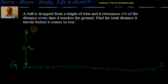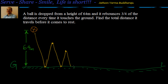The first time the ball falls down, due to gravity it comes down and touches the ground. Then it rebounds — it rebounds up to 3/4 of the distance. Once it rebounds, due to gravity it comes down again. Once it touches the ground again, it rebounds to 3/4 of whatever height it travelled earlier. This continues until it comes to rest.